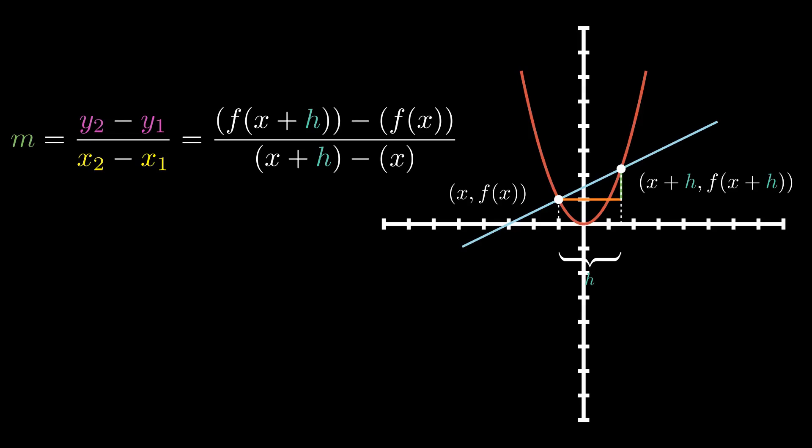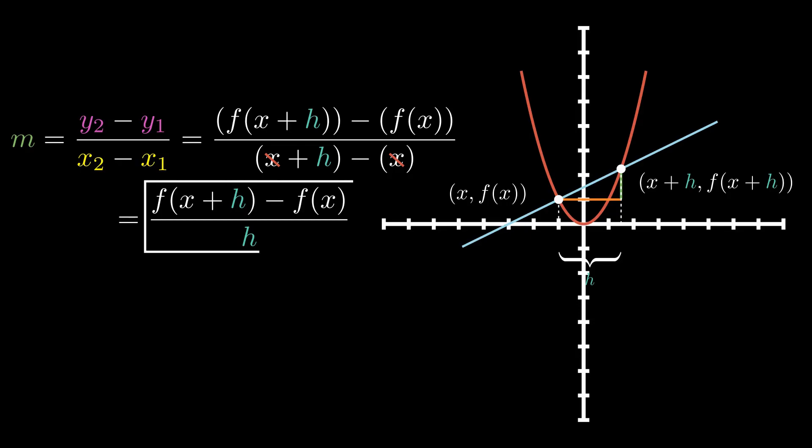Now we can clean this up a little because in our denominator, notice that we have x plus h minus x. We can actually cancel out those x's and that will leave us with just h. And our final answer for our slope would be f of x plus h minus f of x all over h. And boom, we have now just calculated the slope of this line, or our secant line. This right here — f of x plus h minus f of x all over h — has a fancy name that we call the difference quotient. The difference quotient is really just another way to represent our slope formula, because we just did a little substitution between x1, y1 and x2, y2.